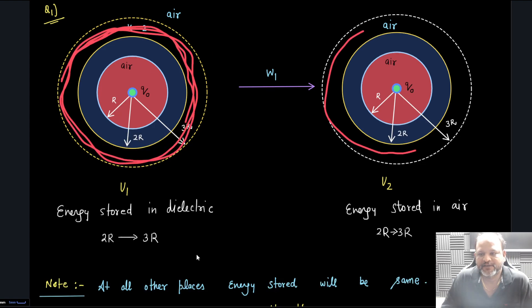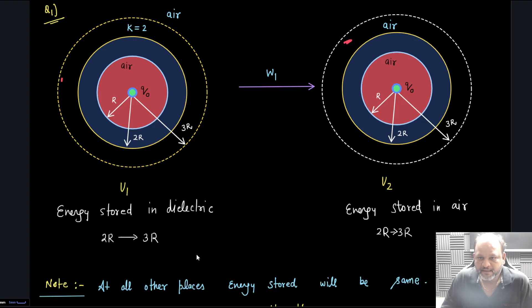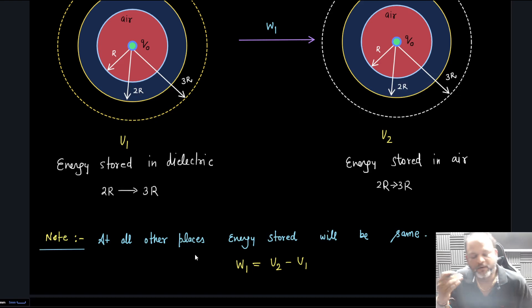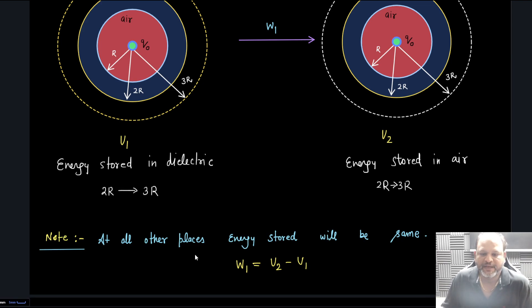Energy stored in the dielectric I'm calling as U1, and where this dielectric was present, whatever energy is present now in air, that energy is U2. All at all other places energy stored will be same so there is no change. I can simply say W1 is basically U2 minus U1. Work by agent is U final minus U initial.